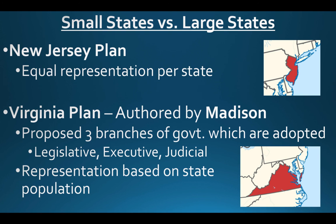The other plan was authored by James Madison and became known as the Virginia Plan. The Virginia Plan proposed the three branches of government — legislative, executive, and judicial — which were ultimately adopted. It proposed that representation in the legislative branch be based on state population. Smaller states like New Jersey opposed this because Virginia had far more people, and small states feared being strong-armed by large states in Congress. The large states felt this was fair because they were home to many more people.